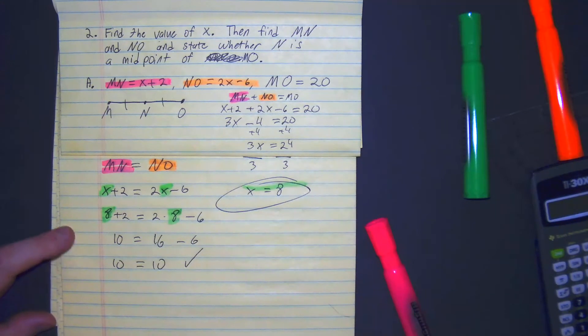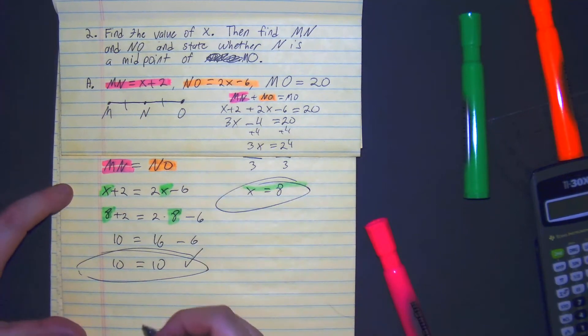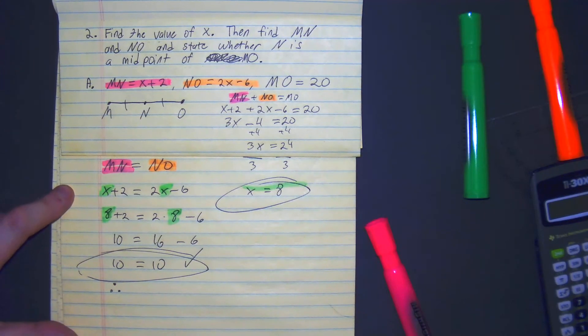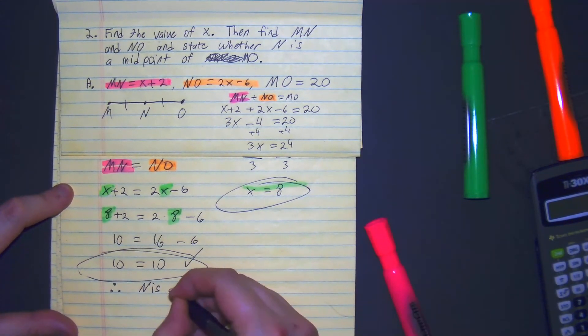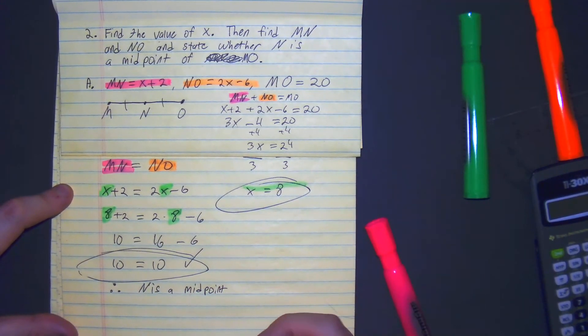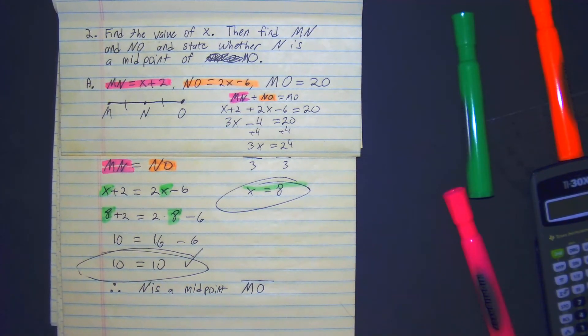Good. So look at that. With 10 equals 10, that means MN is equal to NO. Therefore, N is a midpoint of line segment MO. Alright, let's get to part B in the next video. Thank you.